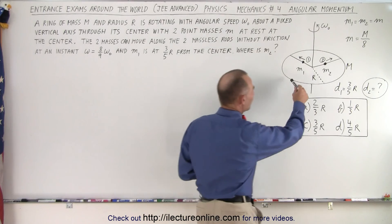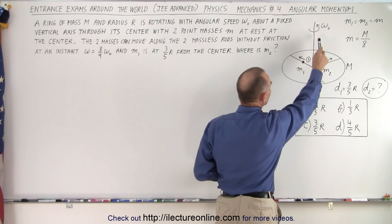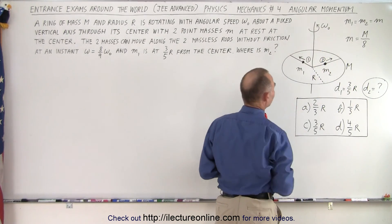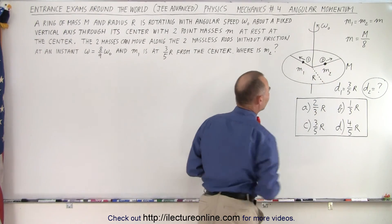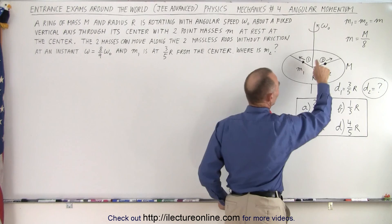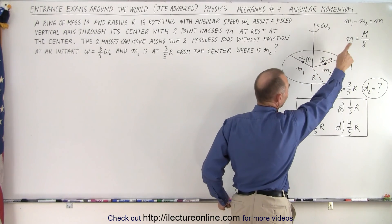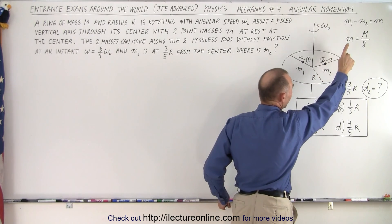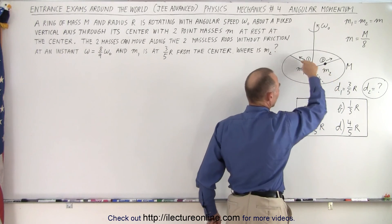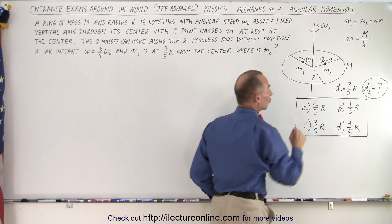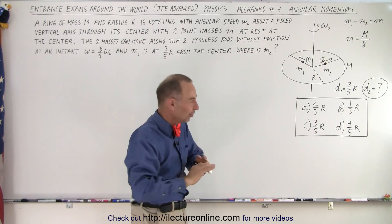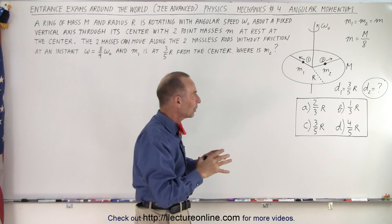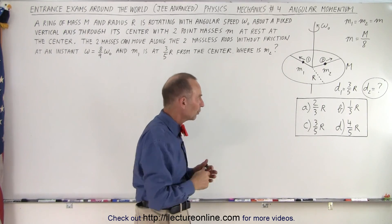Here we have a disk of mass m that's rotating at initial angular velocity omega sub-naught, with two masses starting at the center. Notice that mass 1 and mass 2 have the same mass, equal to one-eighth the mass of the ring. The two rods along which those masses move are massless and frictionless, so they do not add to the moment of inertia of the rotating disk.